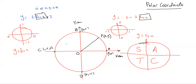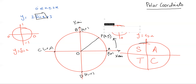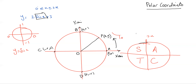If point P moves in the anti-clockwise direction from the original x-axis, the angle is going to be positive. When it goes in the clockwise direction, the angle is measured as negative.